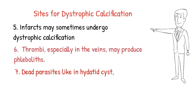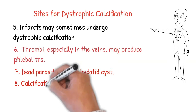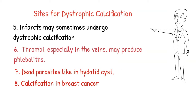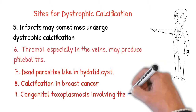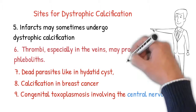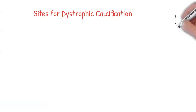In breast cancer, micro-calcification and macro-calcification can occur, which we identify on mammography. In case of Toxoplasma, Toxoplasma gondii — a parasite that loves brain tissue — calcium salts deposit into the parasites, producing white spotty lesions into the brain.